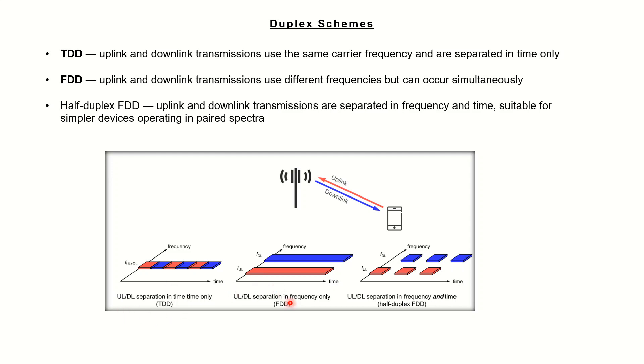In case of frequency division duplex, the other way is we have a separate uplink and separate downlink carrier frequency. Whatever information we want to send in uplink will go in one specific carrier which is defined for that particular technology, in this case 5G NR.